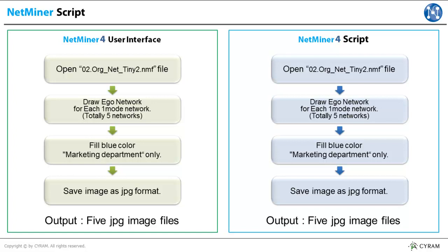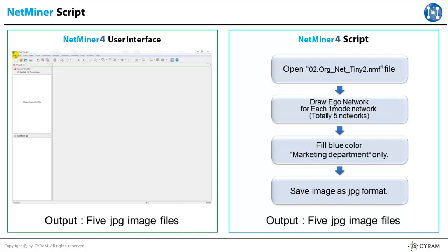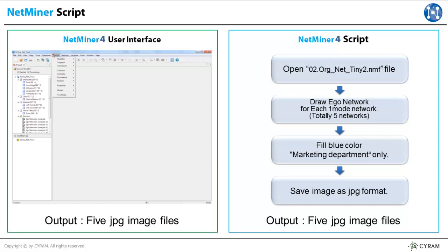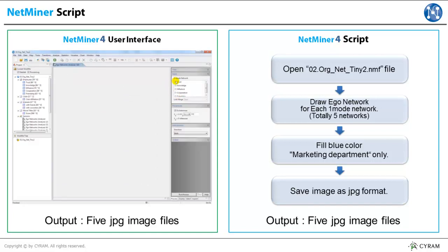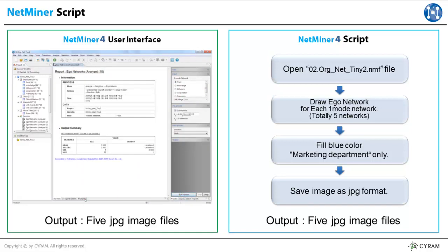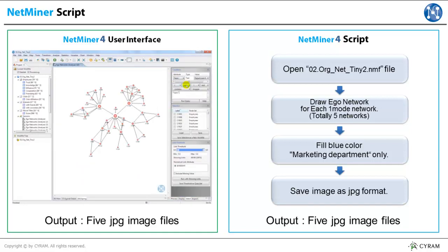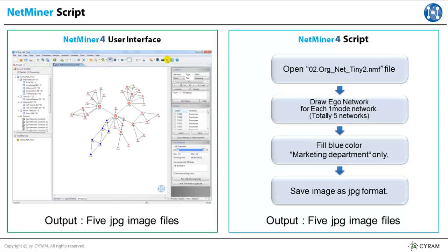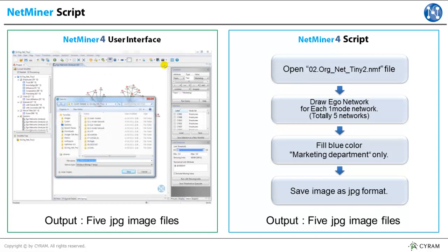First, let's do this by using Netminer UI. On the left side, you may see the process. Now open the Netminer file and run Eagle Networks Analysis. After that, click the Map tab and select Marketing Team, then change the color to blue. You need to save the file as JPG. Name the file as TrustNetwork and save it. Now we got our first map.